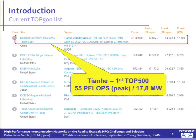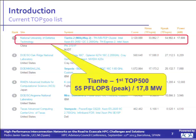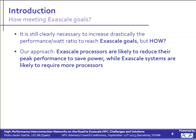Moreover, if we go to the Top500 list, at the top of the rank we can find Tianhe. We have a power consumption of 17.8 megawatts, so we have basically reached the expected power consumption for Exascale — it's very close to the 20 megawatts expected for 2018. It's very clear that we should drastically reduce the power-per-watt ratio in HPC systems. That is basically the main challenge — the real challenge of Exascale.